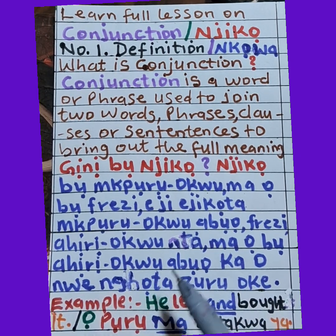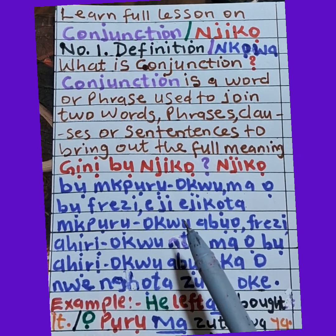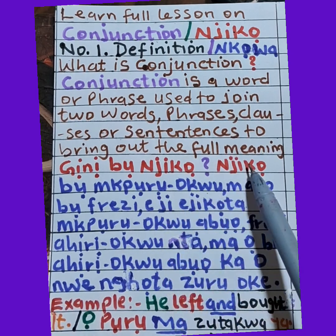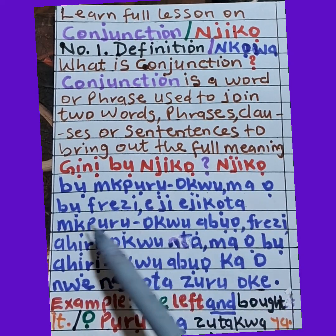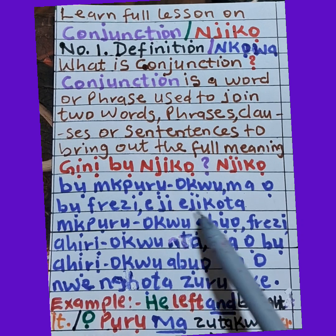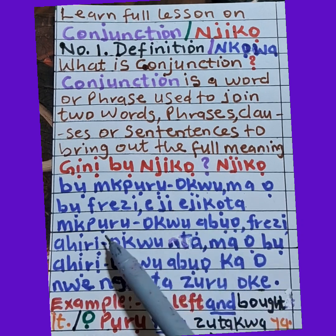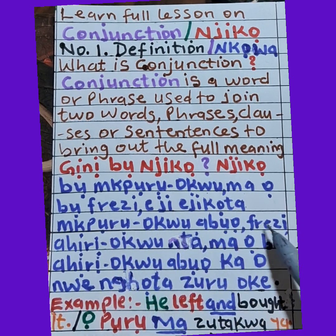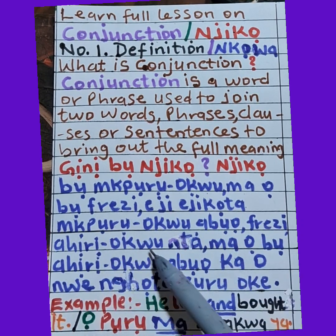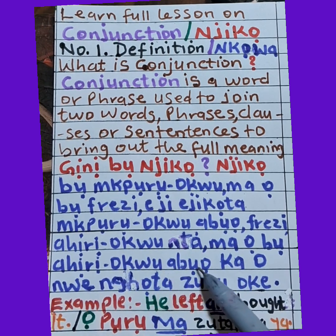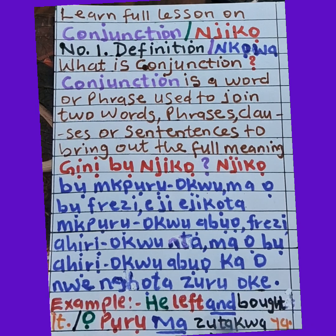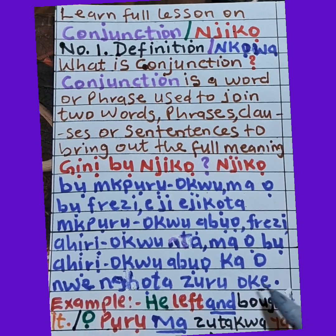Have you seen it inibo? Let's see it again. Njiko abo nkuroku ma obo. Phrase eji ejikota nkuroku abo. Phrase ahiroku nta ma obo. Ahiroku abo ka o nwe nkwata zuru oke.